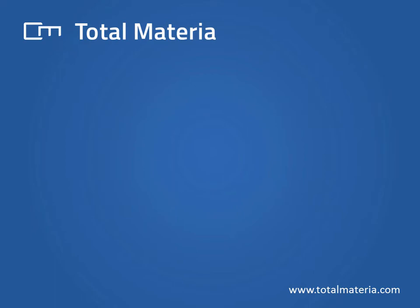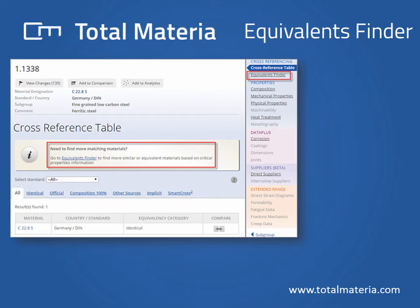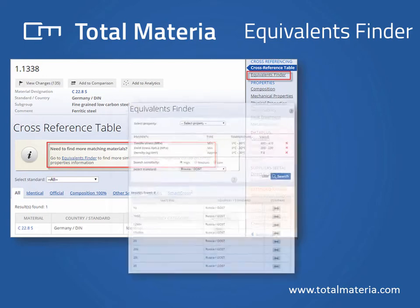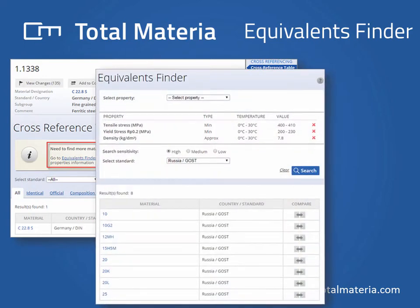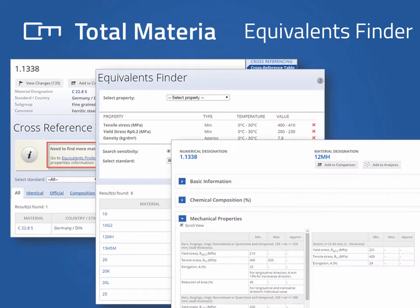Equivalence Finder is a new functionality which allows you to find even more equivalent and similar material options inside Total Materia. Total Materia has more than 15 million connections between materials through the cross-reference tables, but sometimes even this may not be enough.